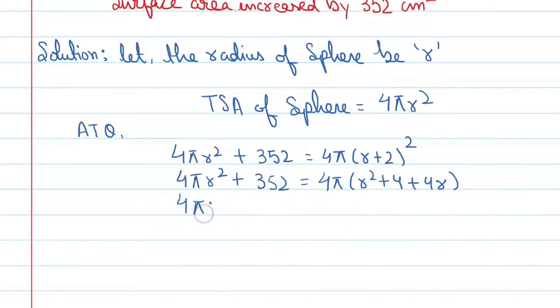Continuing to solve: 4πr² + 352 = 4πr² + 16π + 16πr.